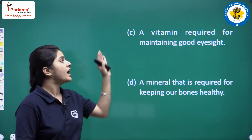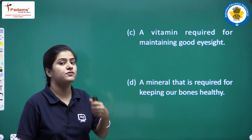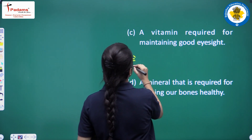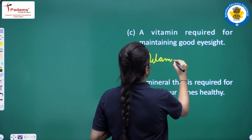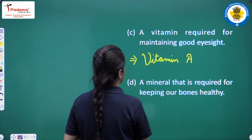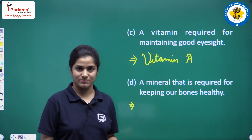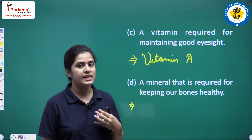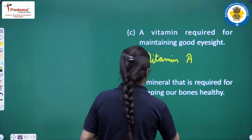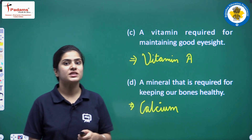Next: a vitamin required for maintaining good eyesight. The answer is vitamin A. Next: a mineral required for keeping our bones healthy. The answer is calcium.